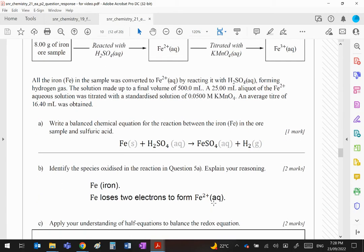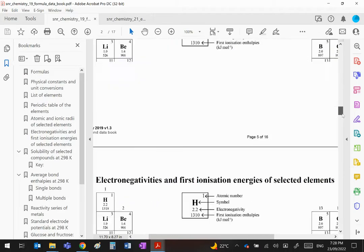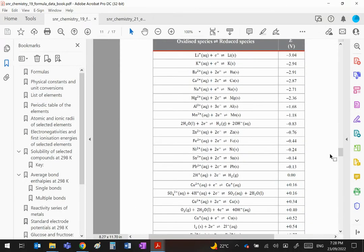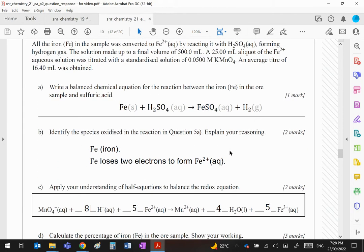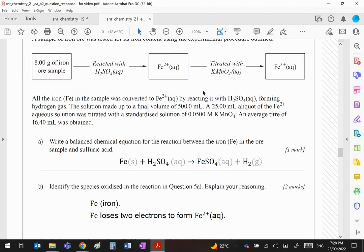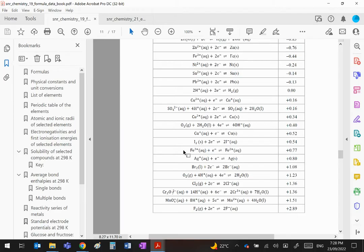It then says half equations to balance the redox equation. Now use your data book, they give it to you. Go down to page 10 and you will see that there is the Fe equation going backwards, oxidation remember. And there's the manganate equation going forwards, a reduction. It's saying the Fe2+ is being reacted with MnO4 minus. So we want the equation between MnO4 minus and Fe2+. So it's this equation here, Fe2+ to Fe3+.